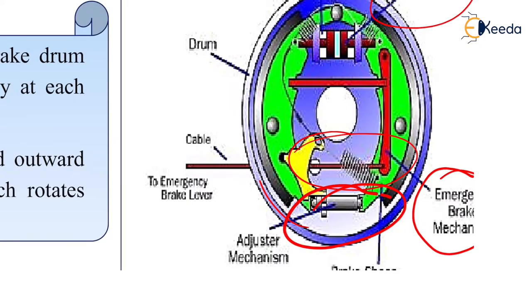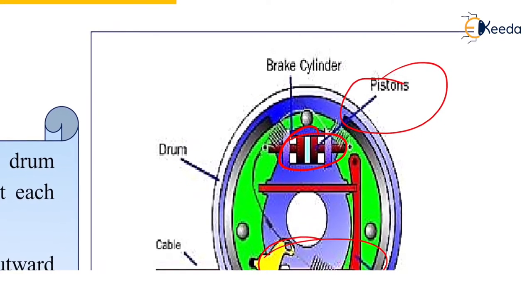What is the adjuster mechanism? When the shoes are pressed against the drum, we have to return the shoes to their original position. For that purpose, the adjuster mechanism is used here. It will be a returner spring.